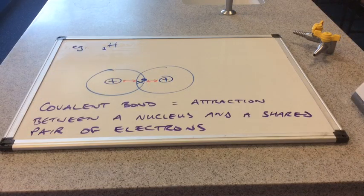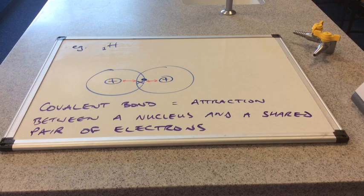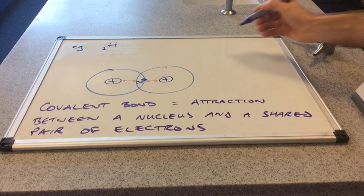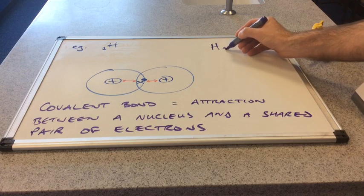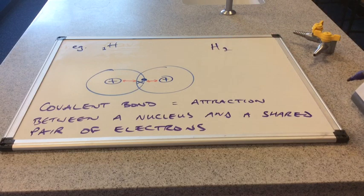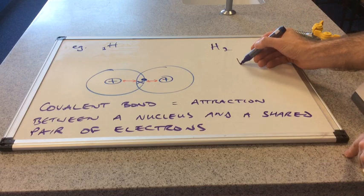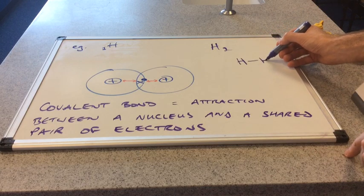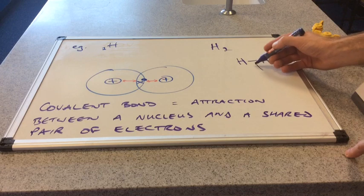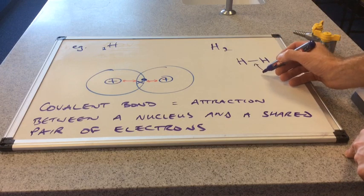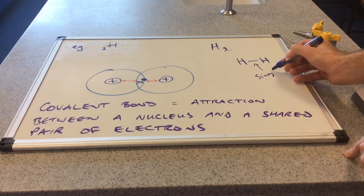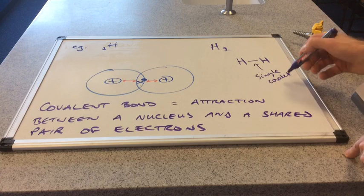So you can see I've written up the definition now. The covalent bond is the attraction between a nucleus and a shared pair of electrons. That's why the formula of hydrogen the element is H2. Another way you could draw that would be H - solid single line - H, and that solid line represents a single covalent bond.